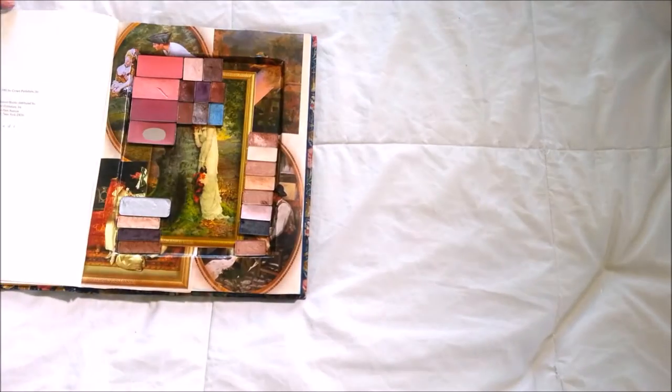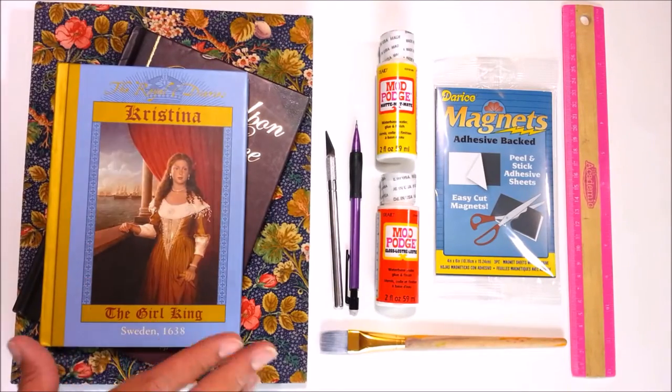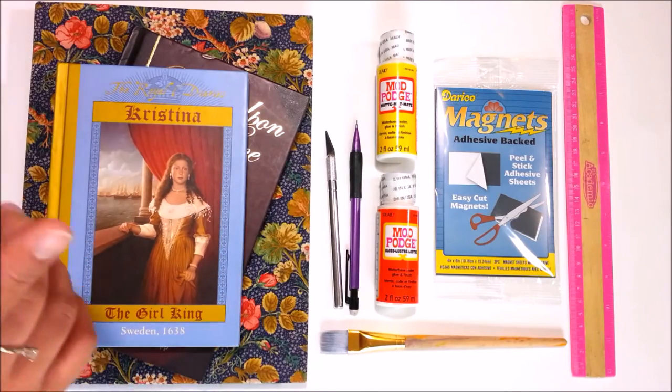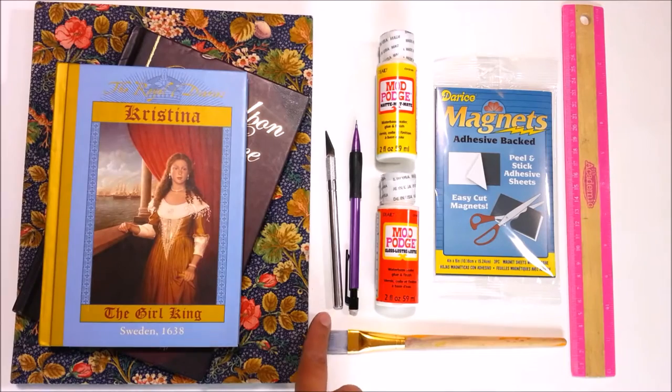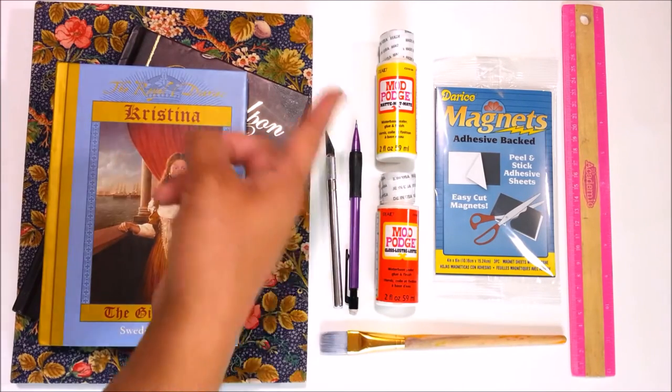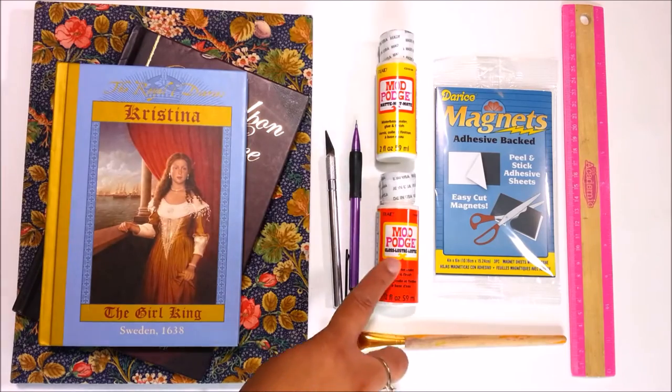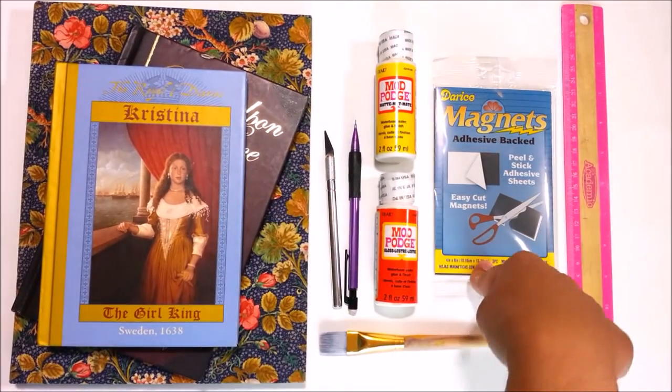What you will need for this DIY is books - you can get them from consignment stores, thrift stores, or if you have some in your collection you haven't known what to do with, you can use those. An exacto knife - careful, it's sharp - a pencil, an old paintbrush, and Mod Podge. I have two different ones: the gloss and the matte.